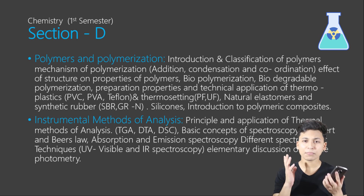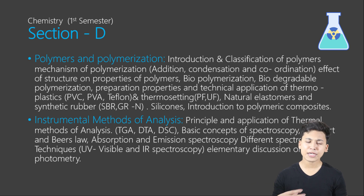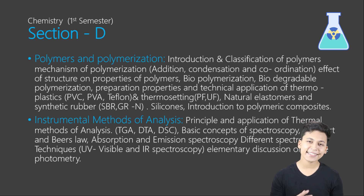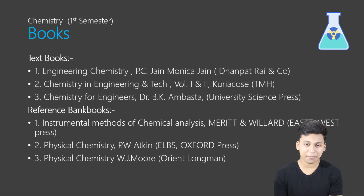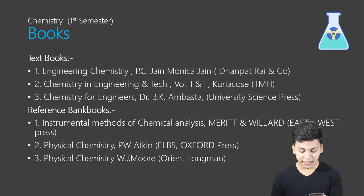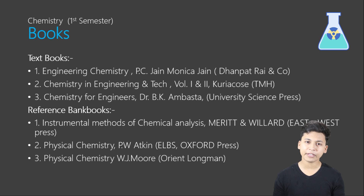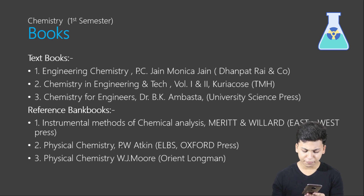Having covered all four sections, if you study one part of every section well you can pass with decent marks — but if you study both topics of every section you can score very well. The book I recommend is Engineering Chemistry by P.C. Jain and Monika Jain, published by Dhanpat Rai Corporation — this is one of the most famous books for engineering chemistry. As a reference book, you can also use Physical Chemistry by P.W. Atkins, published by Oxford Press.